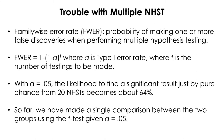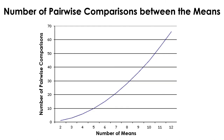When we set alpha at 0.05 for a t-test, that is only meant to be used for a single comparison between two groups. If we have more groups to compare, the number of pairwise comparisons will also increase, and when the number of comparisons increases, the family-wise error rate also increases.